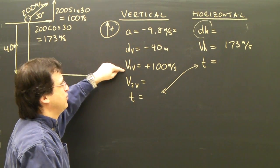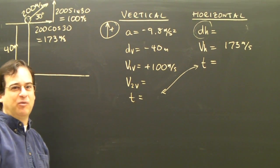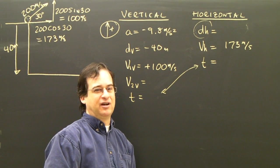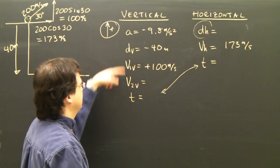I've got one, two, three variables in this column. I can use my big five equations and solve for time. Bring it over here, put it here, and solve for my horizontal distance. So let's put these numbers in.